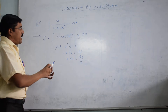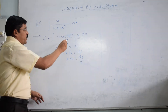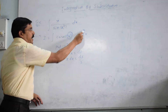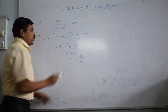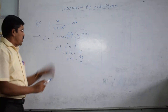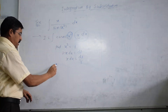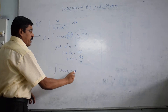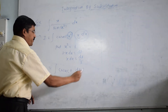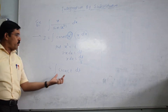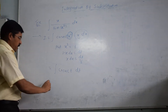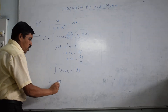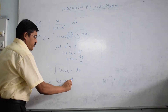It means that by substitution, we have converted x² into t and this part x dx into dt/2. So what do we get? It is equal to cosec(t) dt. And now, what is the formula for cosec(t)? Its formula is log of tan(t/2).